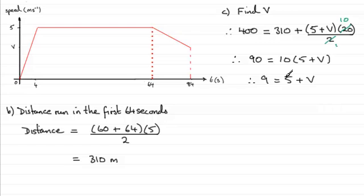And if I take 5 from both sides, I end up with v equaling 4. So there you go, v is 4, or 4 meters per second, is that speed that the girl crosses the finishing line with.